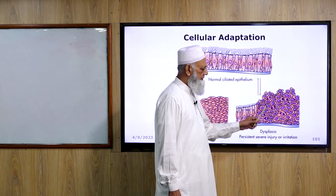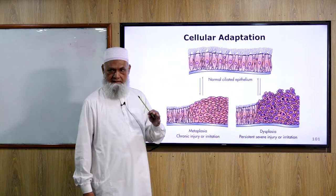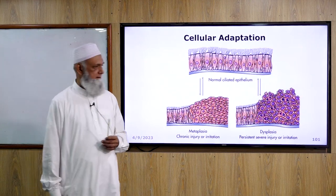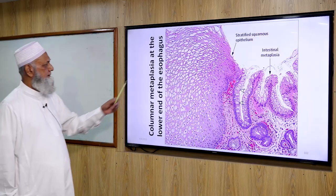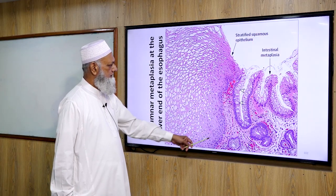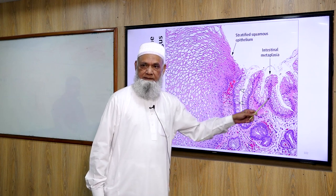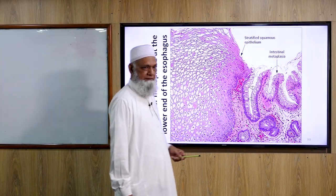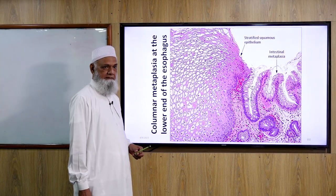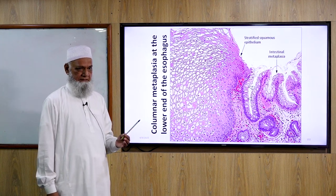What are the characteristics of dysplastic cells? We will discuss later. This shows the lower end of the esophagus replaced by gastric type columnar epithelium due to acid dysplasia.